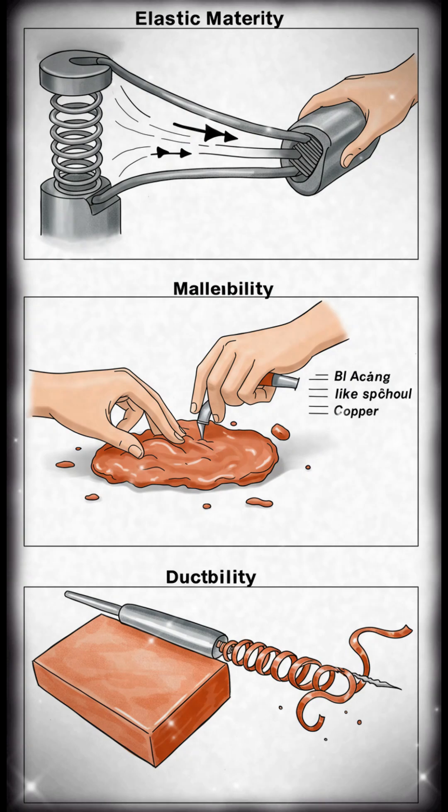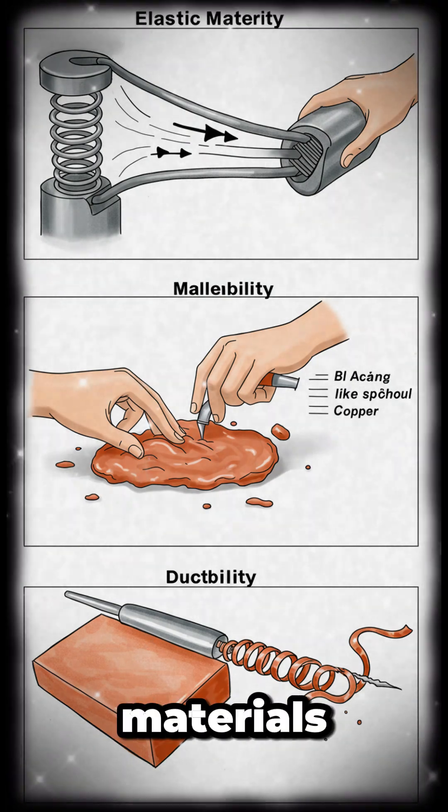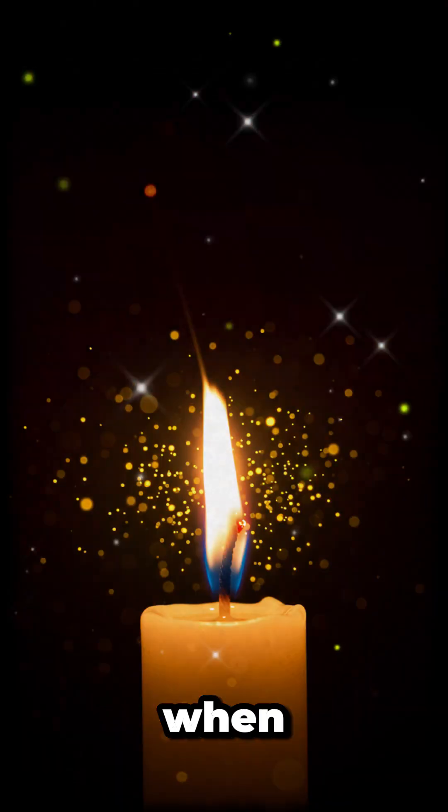Malleable materials can be molded, ductile materials can be drawn into wires. When things burn, they react with oxygen and release heat.